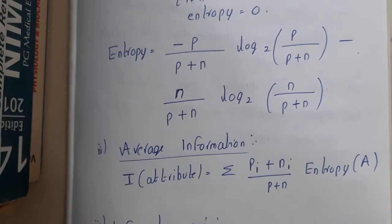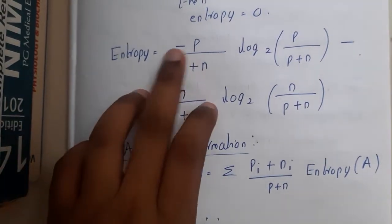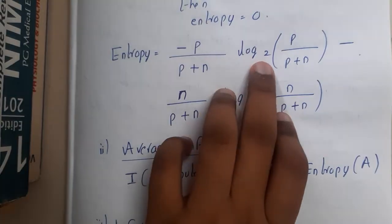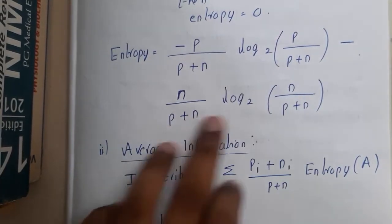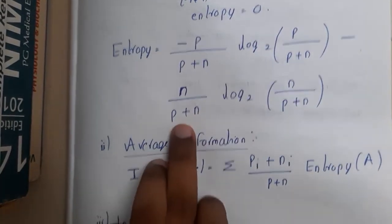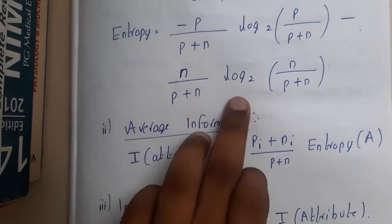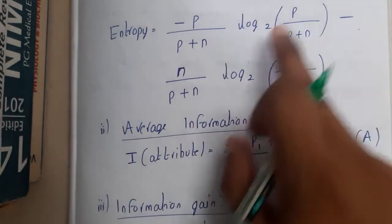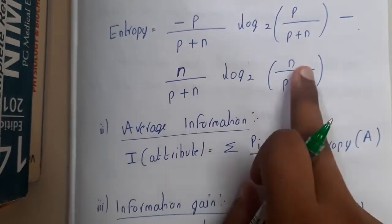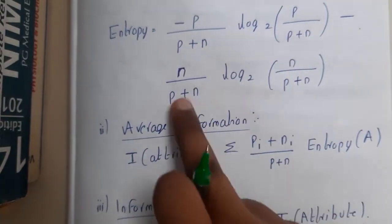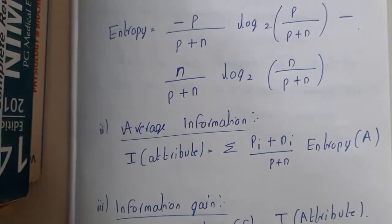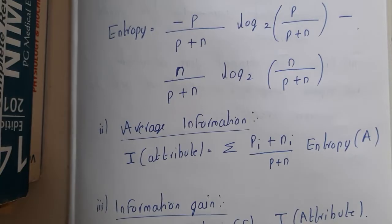Entropy = −(P / (P+N)) × log₂(P / (P+N)) − (N / (P+N)) × log₂(N / (P+N)). Once you take P in the numerator and once you take N in the numerator, the denominator is P+N in both cases. The formulas are really simple to observe, but they are time-consuming to solve.